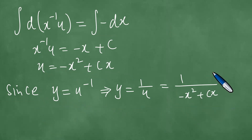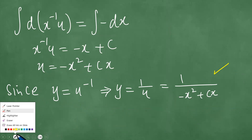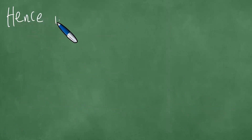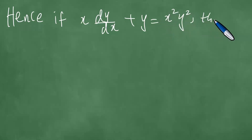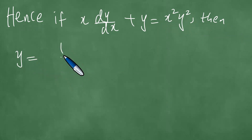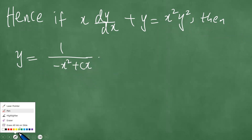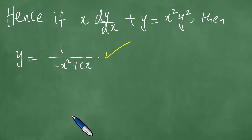Hence, if x dy/dx plus y equals x squared y squared, then y equals 1 divided by minus x squared plus cx. This is the answer, and we have solved this problem in detail. Thanks everybody for your time and attention, and goodbye.